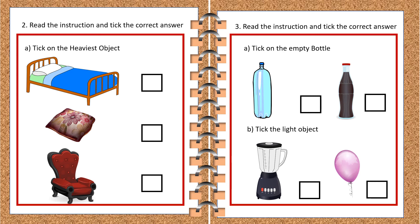Our next activity: read the instruction and tick the correct answer. This time we have to tick on the heaviest object. The first picture is a bed, the second is a pillow, and the third is a chair. Which one is the heaviest among them? It's the bed. The next activity says tick on the empty bottle. Tell me which one is the empty bottle — the blue bottle or the black bottle? The black bottle has liquid filled in it, so the left bottle is empty.